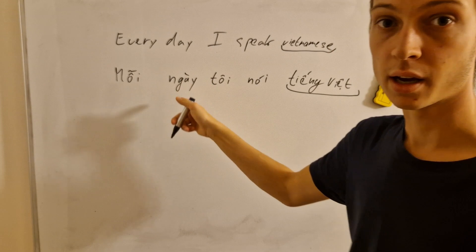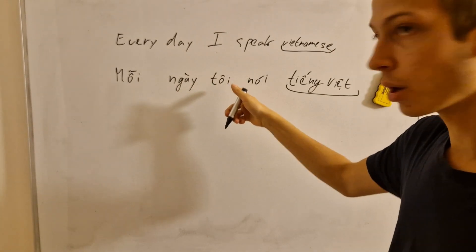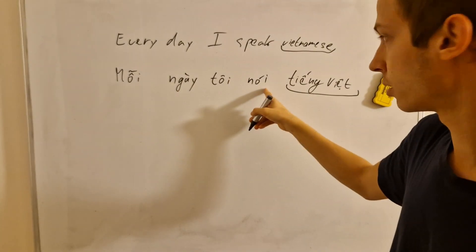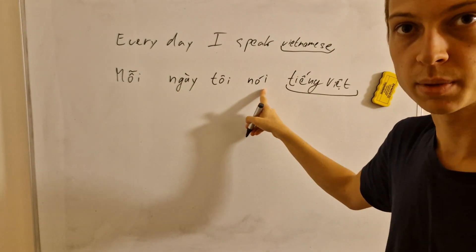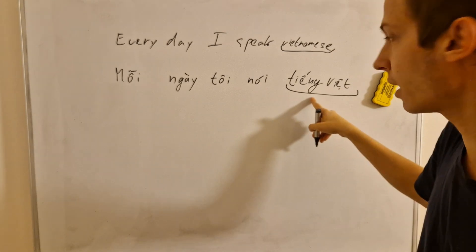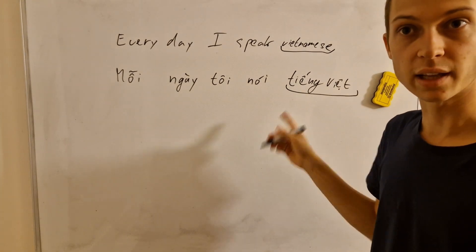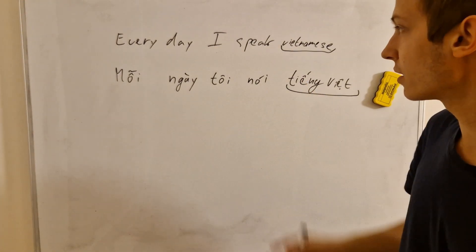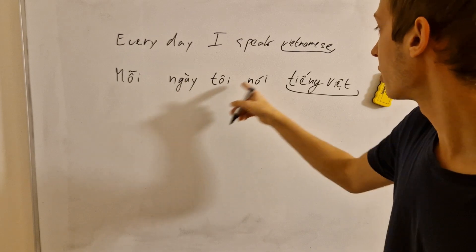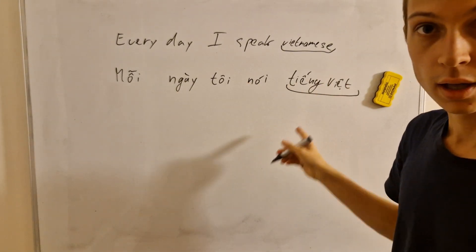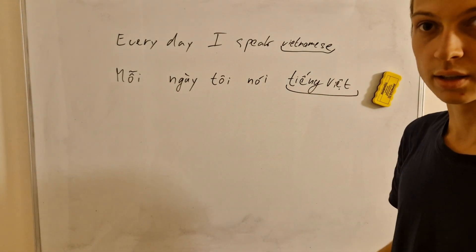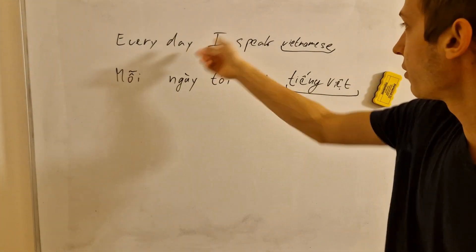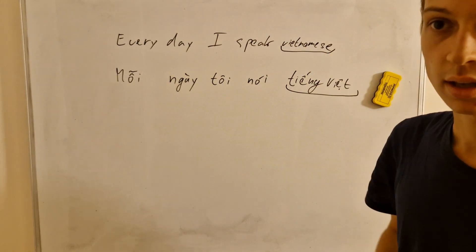'Ngày' means 'day,' 'tôi' is 'I,' 'nói' means 'speak,' and 'tiếng Việt' is 'Vietnamese.' So we have the full sentence: mỗi ngày tôi nói tiếng Việt. This is the sentence one uses to say 'Every day I speak Vietnamese.'